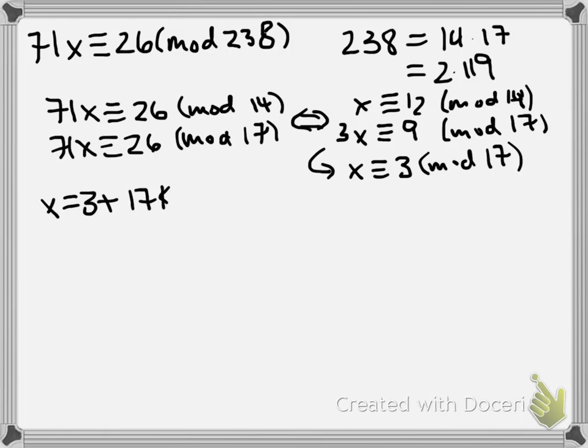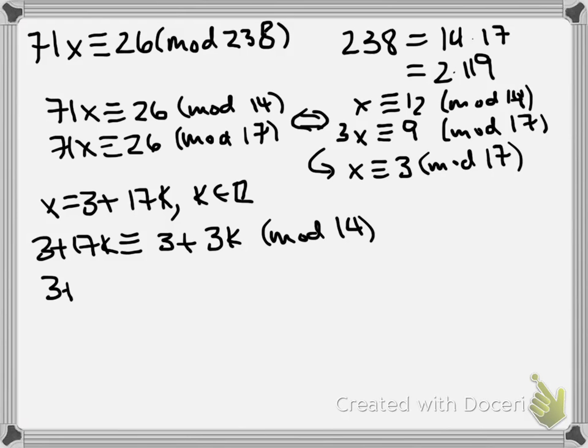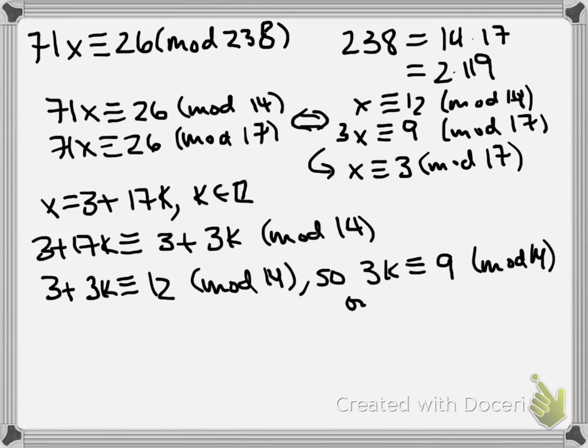x is 3 plus 17k for k being an integer. Reduce that mod 14, and we get that x is congruent to 3 plus 3k mod 14, but x is also congruent to 12 mod 14, so we have 3k is congruent to 9 mod 14. Again, cancel the 3, this is co-prime to 14, so k congruent to 3 mod 14.